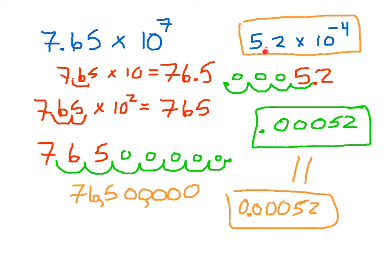The reason this trick only works for negative exponents is that you know there will be no digit in front of the leading digit, so all positions to the left will be zeros. The best thing to know overall is that the power on the 10 tells you how many decimal places to move. Positive exponent: move to the right. Negative exponent: move to the left.